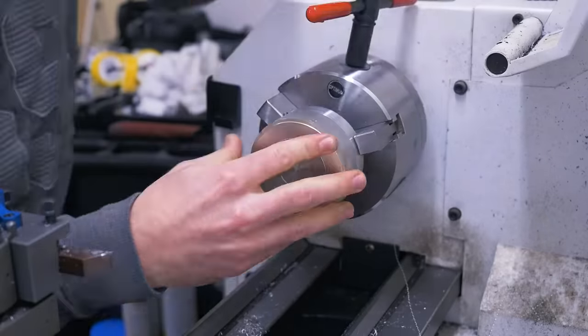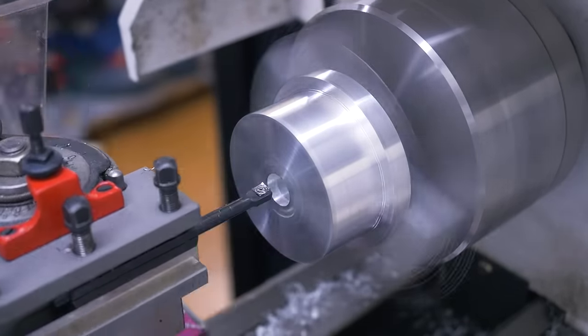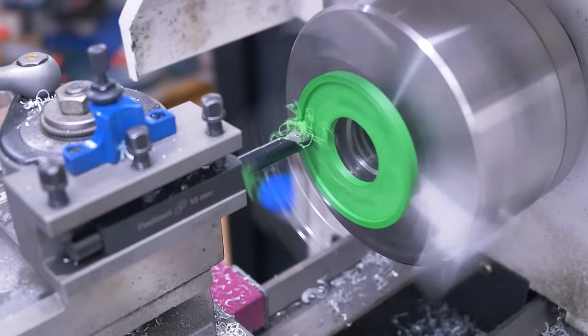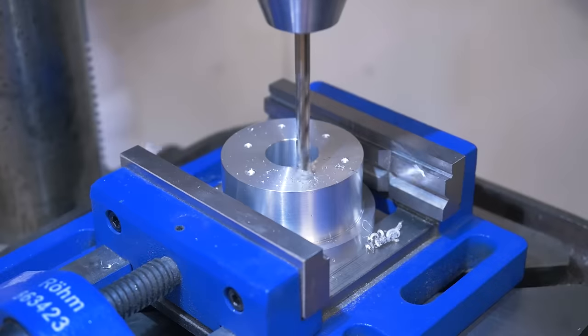It also starts with facing both sides, turning to final diameter and turning the hole to clear the coupling. With another template, I again mark hole positions, but this time they are all for M6 socket head bolts.